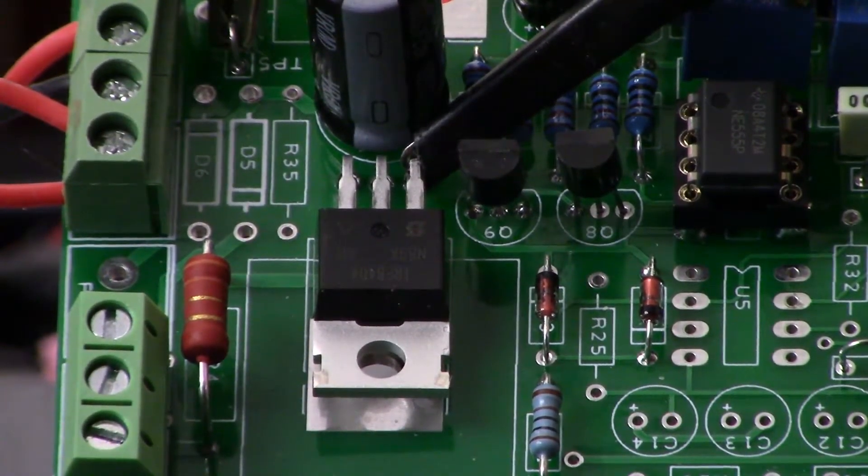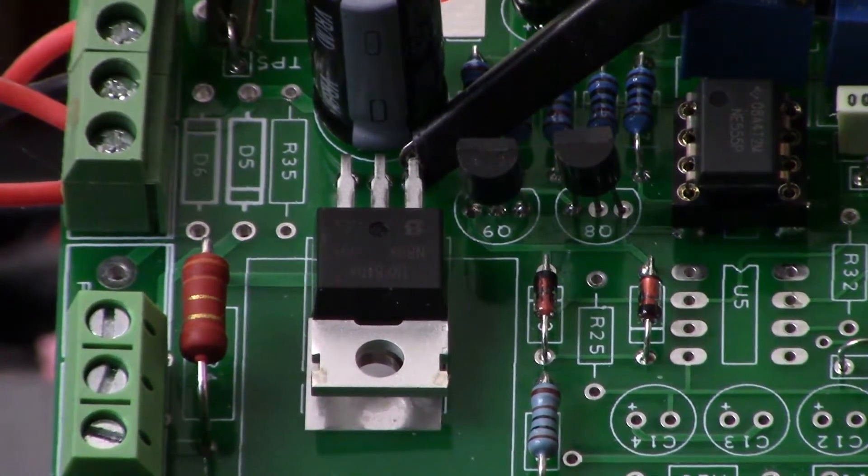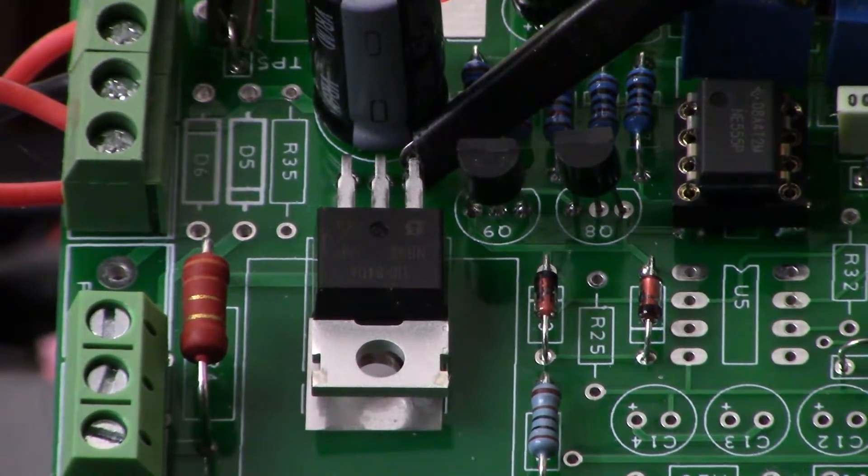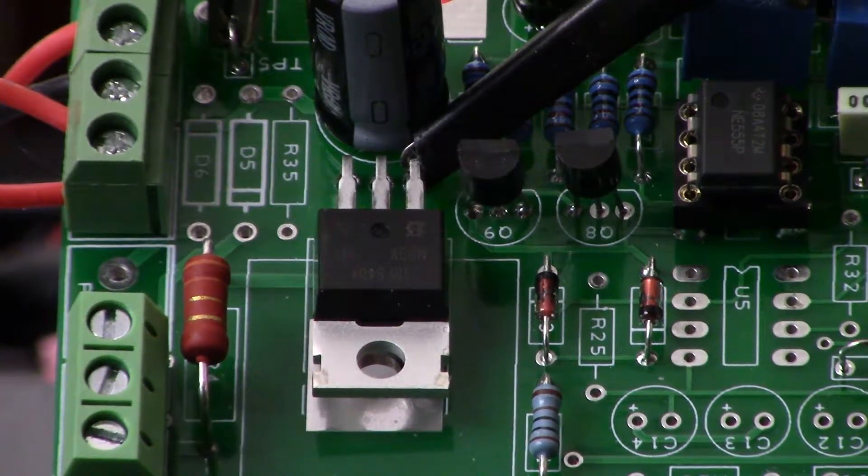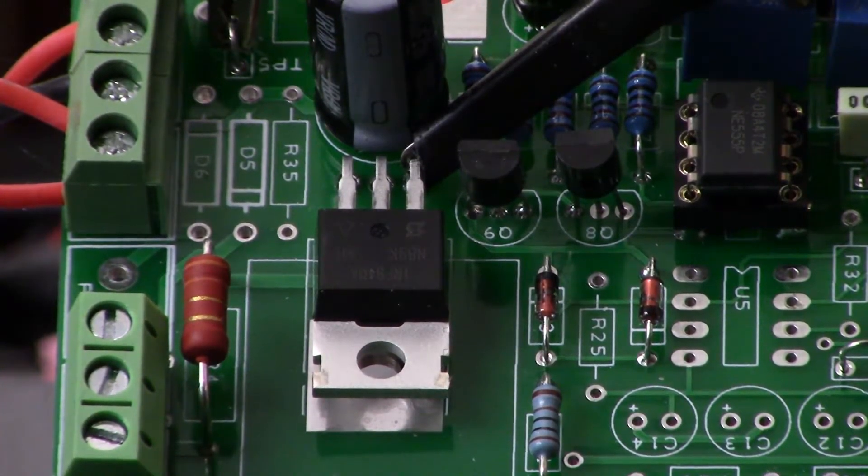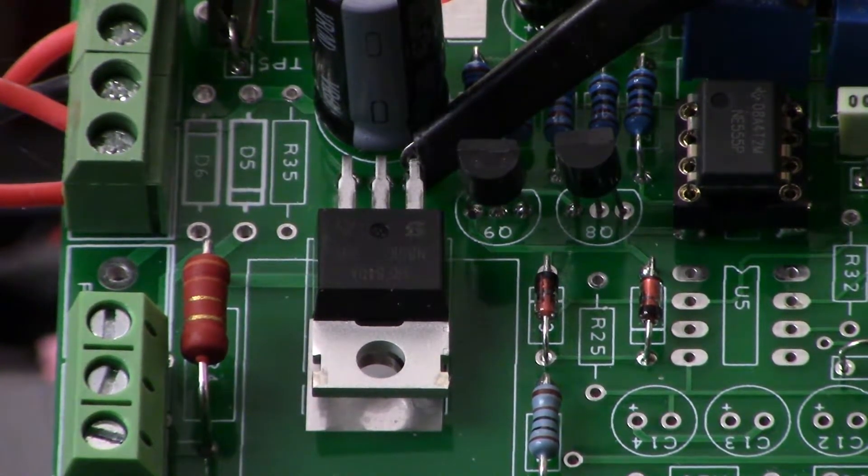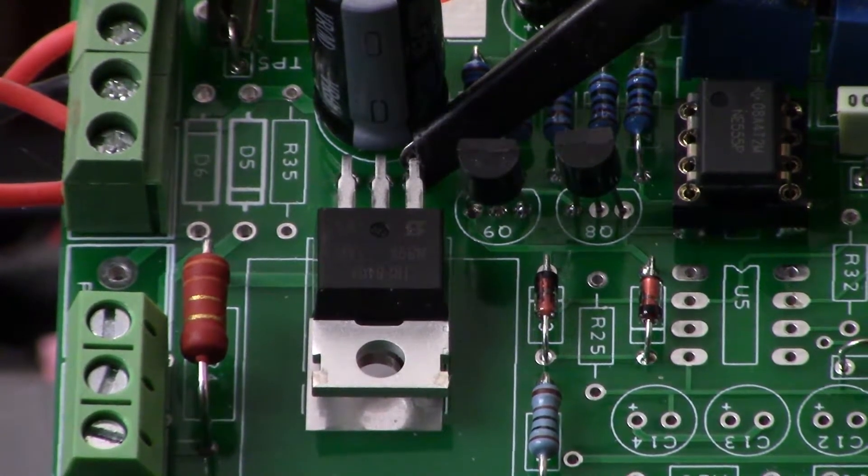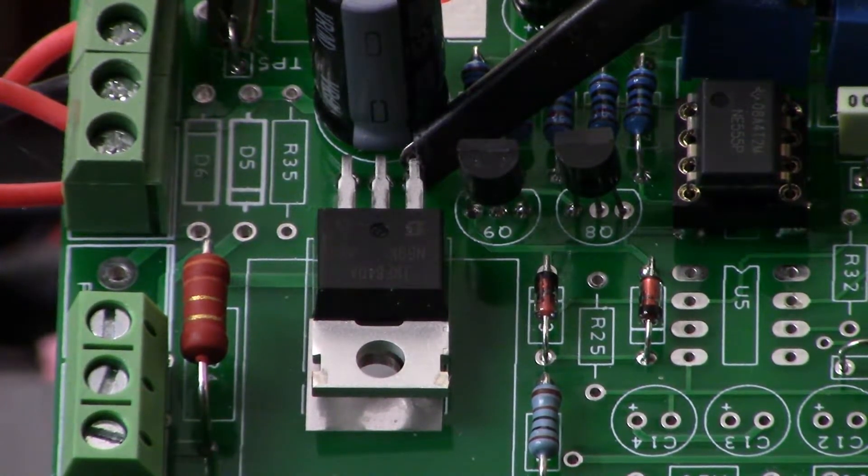So that's what that looks like. You could also make your connection at test point four and you'd see approximately the same thing. It makes a very slight bit of difference but in my case I went right to the gate of the MOSFET.